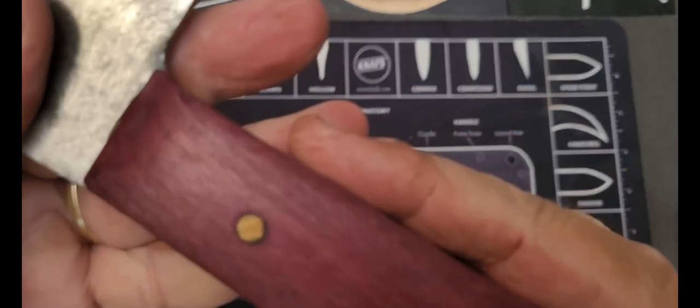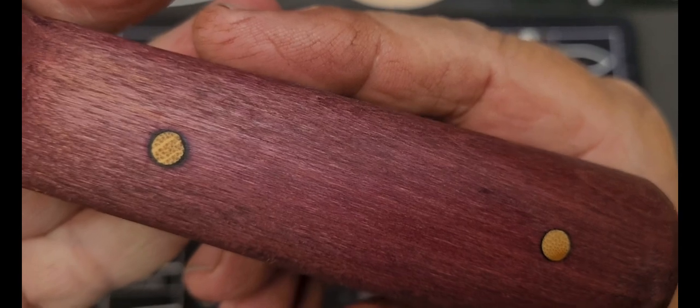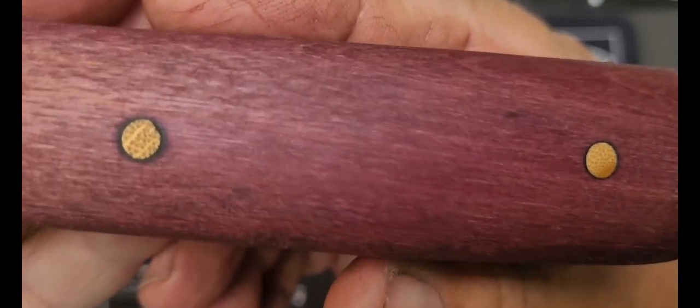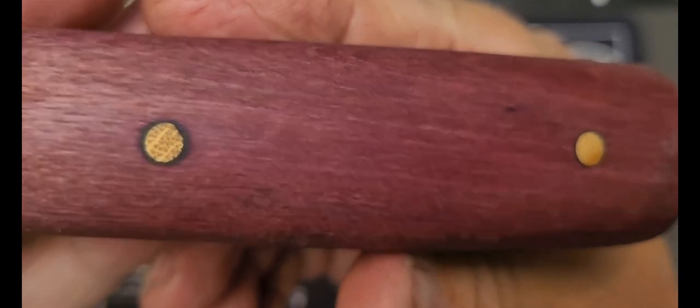You can see the grain, those long tubular grain that's in the bamboo.